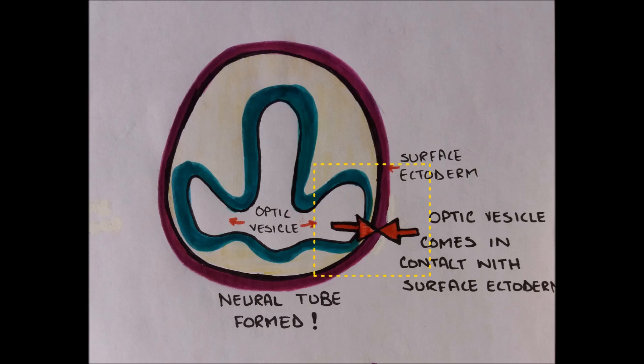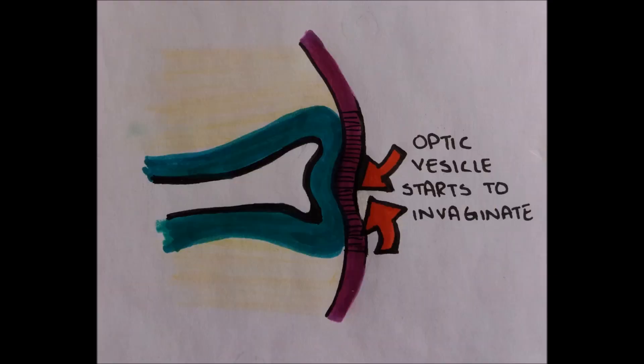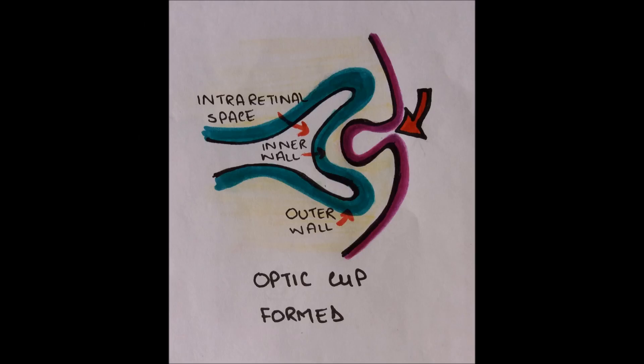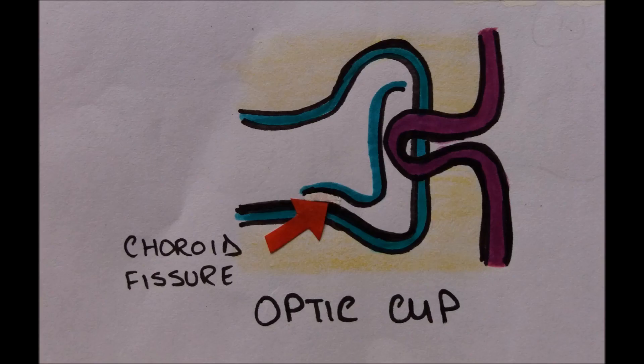The optic vesicles come in contact with the surface ectoderm. The optic vesicle then starts to invaginate and forms the optic cup. The optic cup is double-walled; the inner and outer layers are initially separated by the intra-retinal space. The invagination is not only present in the central portion of the cup but also at the inferior surface. This is called the choroid fissure.